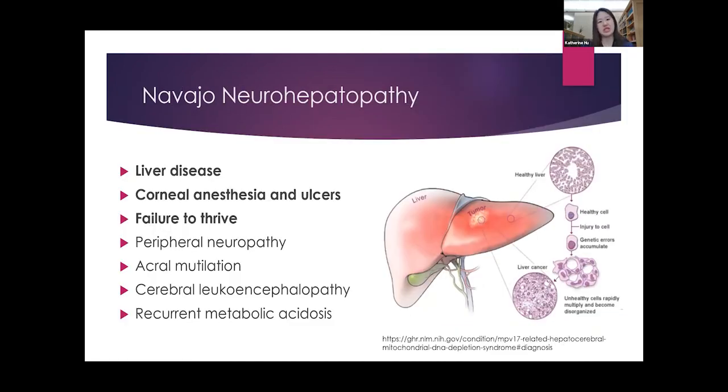It has been postulated that this mutation is closely linked to the high concentration of uranium in the drinking water of the Navajo reservations. They have identified this genetic defect by blood samples and homozygosity mapping, which have been published in case reports in literature. Clinical presentations of Navajo neurohepatopathy can include liver disease, corneal anesthesia and subsequent ulcers, failure to thrive, as well as peripheral neuropathy and acral mutilation. Acral mutilation being injury to hands and feet and limbs due to loss of sensation, as well as cerebral leukoencephalopathy, recurrent metabolic acidosis, and recurrent infections due to poor healing.